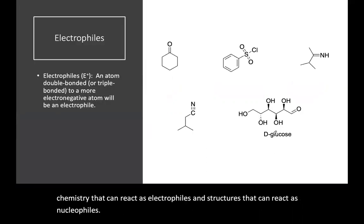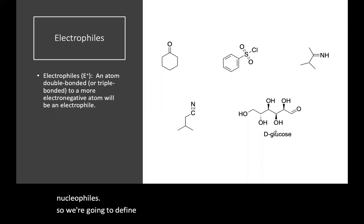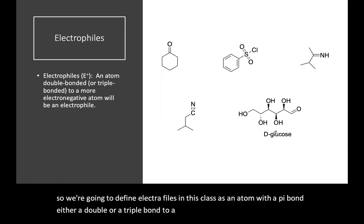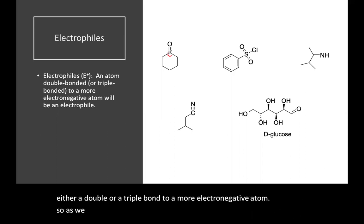We're going to define electrophiles in this class as an atom with a pi bond, either a double or a triple bond to a more electronegative atom. So as we start to go through some of these, here's a carbon double bonded to the more electronegative oxygen, so this will be an electrophile.